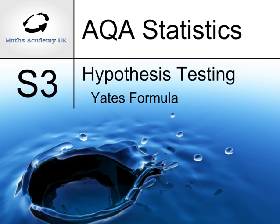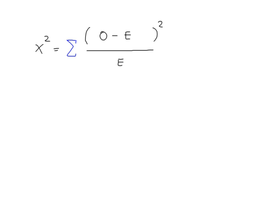Hypothesis testing using the Yates formula for contingency tables. This formula is the standard formula used to work out the test statistic when dealing with contingency tables. It's in the formula book. You can modify this formula quite easily to get the Yates formula. Now this is what you do.